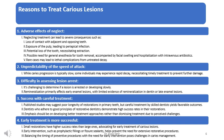Early treatment is more successful — small restorations have higher success rates than large ones, advocating for early treatment of caries lesions. Early intervention, such as prophylactic fillings, helps prevent the need for extensive restorative procedures. Balancing the timing of preventive procedures with the need for early intervention poses challenges in caries management. Conclusion: despite potential challenges and uncertainties, treating caries lesions in primary teeth is essential to prevent adverse consequences, ensure successful outcomes, and promote optimal oral health for children.